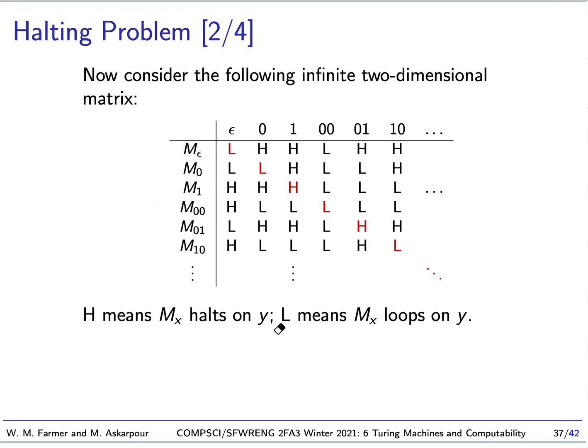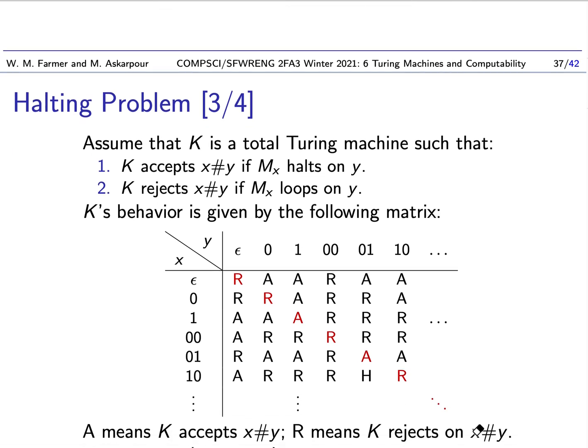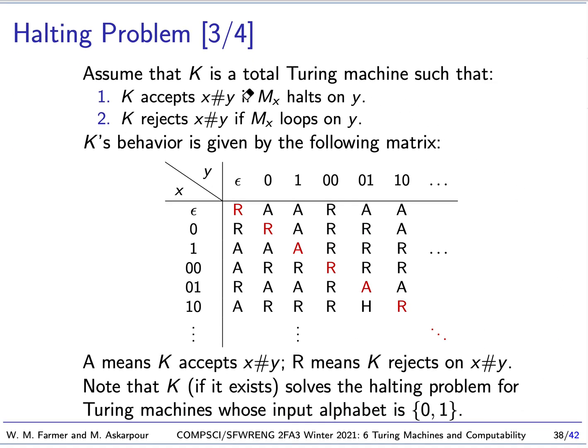So like if we look at this one and this one, this says, well, H means it halts, L means it loops. So this says that this machine, this Turing machine, given this input, loops. So we have this big infinite dimensional matrix. We have all the machines here, all the possible inputs here. So what we want to do now is we want to assume that we have a machine K, it's total. And so it's a Turing machine. We're assuming that we have such machine, it's total. And K accepts